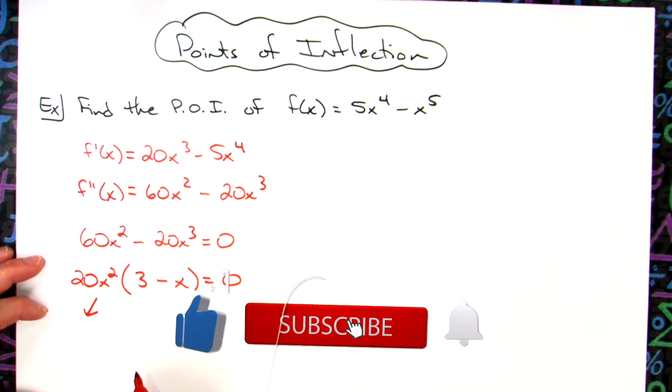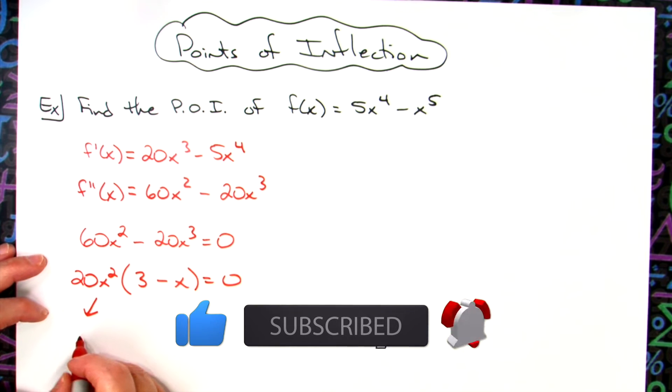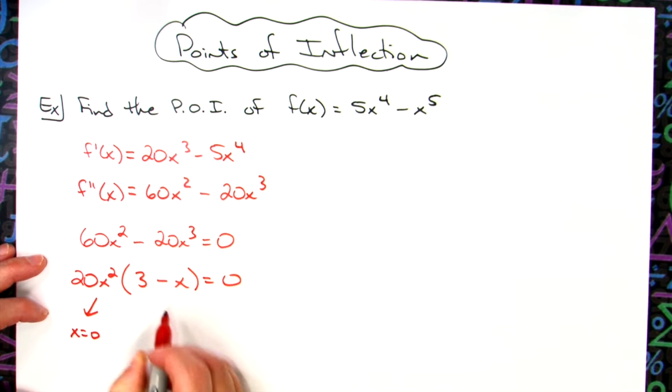We'll set both of these equal to zero because of the zero product principle, so x is going to be zero. Setting this equal to zero, we're going to have x equals three.